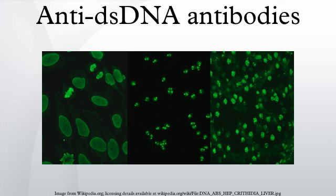Crithidia luciliae is a haemoflagellate protist with an organelle known as the kinetoplast. This organelle contains a high concentration of circular DNA with no recognizable nuclear antigens, allowing for the reliable detection of anti-dsDNA antibodies. The kinetoplast fluoresces if serum contains high avidity anti-dsDNA antibodies. This test has a higher specificity than EIA because it uses unprocessed DNA. Processed DNA can contain regions of ssDNA, allowing detection of anti-ssDNA antibodies, which can give false positive results.